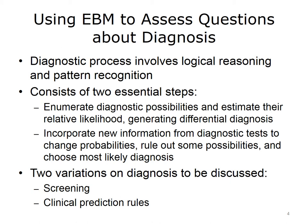The diagnostic process actually has two essential steps. Before we can begin talking about diagnostic tests, we have to enumerate all the diagnostic possibilities and estimate their likelihood. Diagnostic decision support systems generate a differential diagnosis — not only of the possibilities, but also of the likelihood of each possibility, based on the data collected about the patient and his or her condition. The second step is to incorporate new information from diagnostic tests that affect the probabilities for different items of the differential diagnosis. We can then rule out some possibilities and choose the most likely diagnosis.